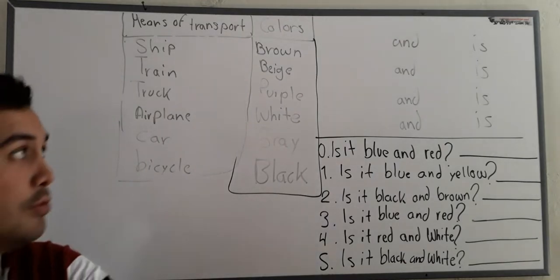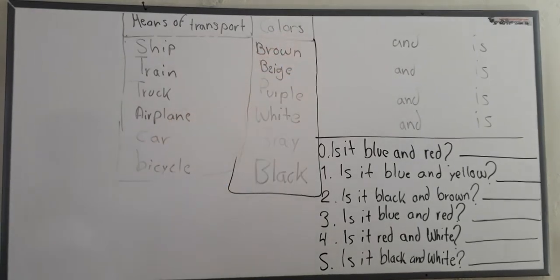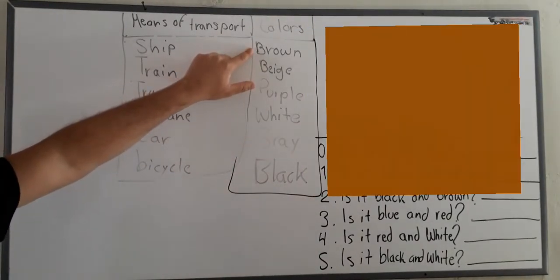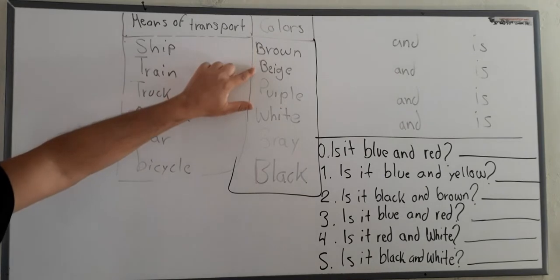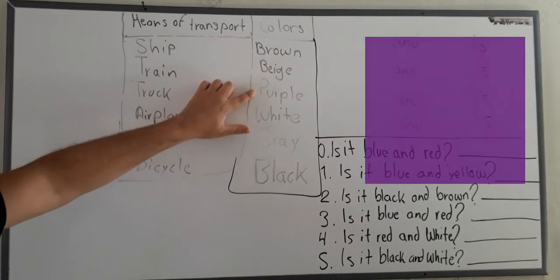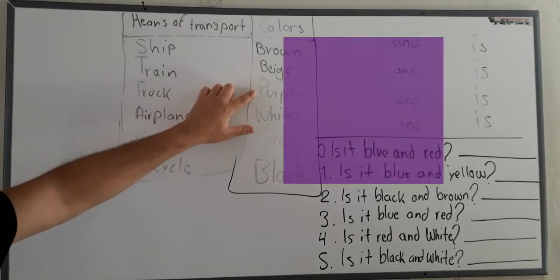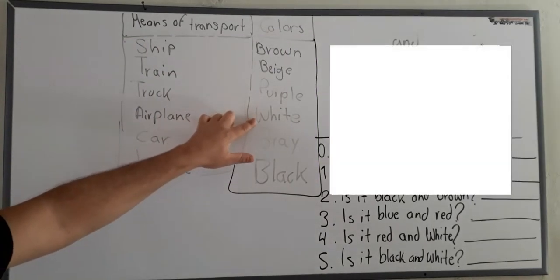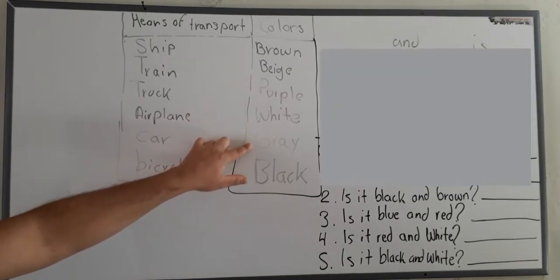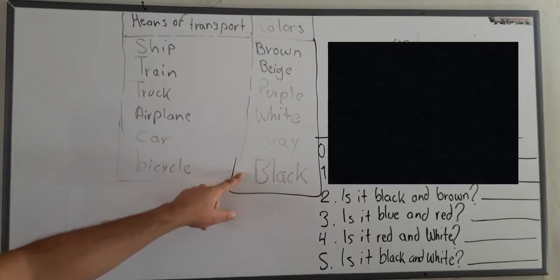Okay? Now, we move on to colors. Colors. Okay? Let's start with colors. Brown. Beige. Purple. Purple. White. Gray. Gray. Black. Black.